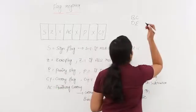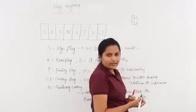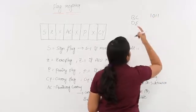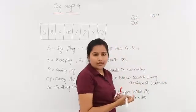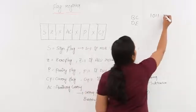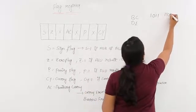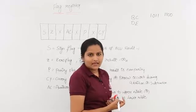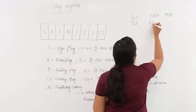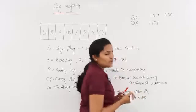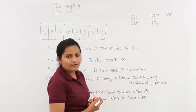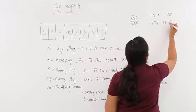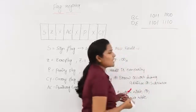Now taking the binary values: B is 11 which is 1011, C is 12 which is 1100, D is 13 which is 1101, and E is 14 which is 1110. Now we need to add these two pairs.